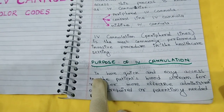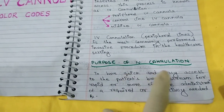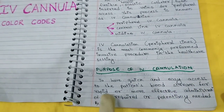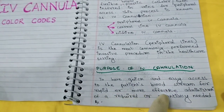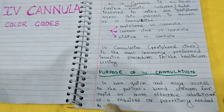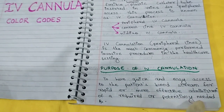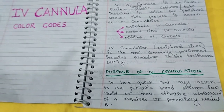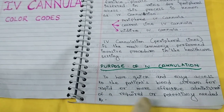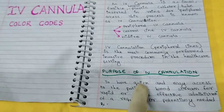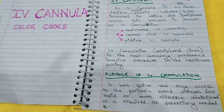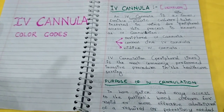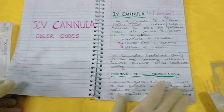We are doing IV cannulation to gain quick and easy access to the patient's bloodstream for rapid or more effective administration of required or potentially needed treatment. In short, you can remember the purpose of IV cannulation is to have quick and easy access to the patient's bloodstream so that whatever treatment is required, you can administer it in an effective way.